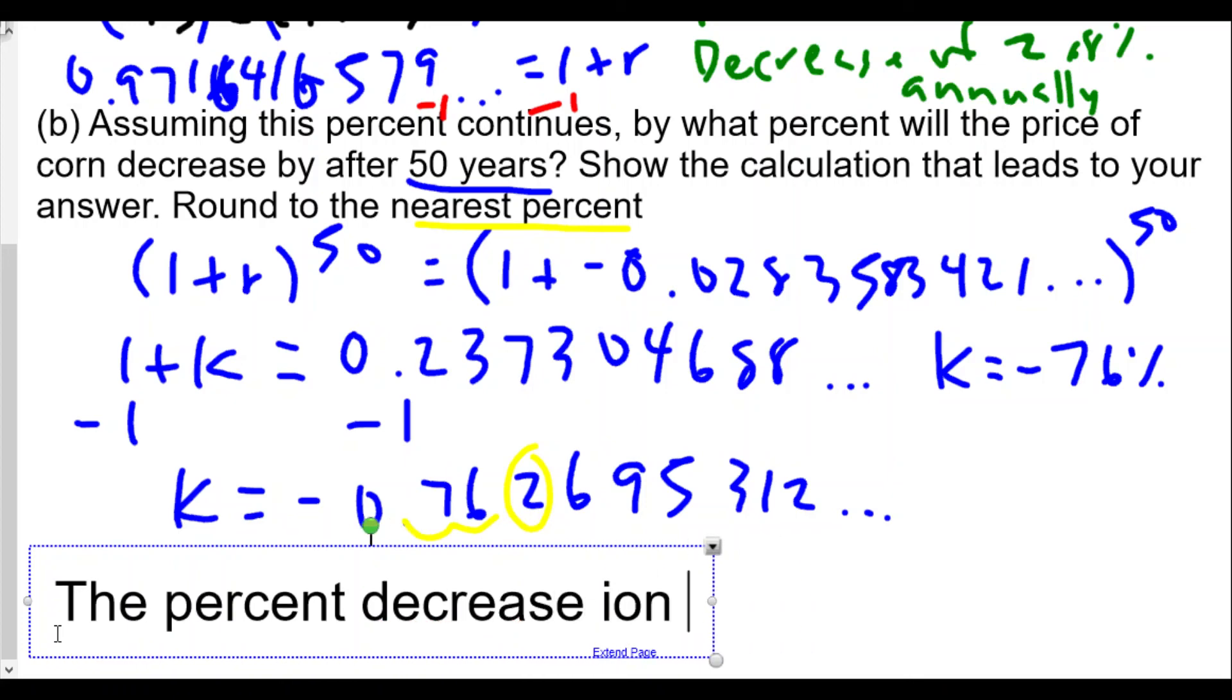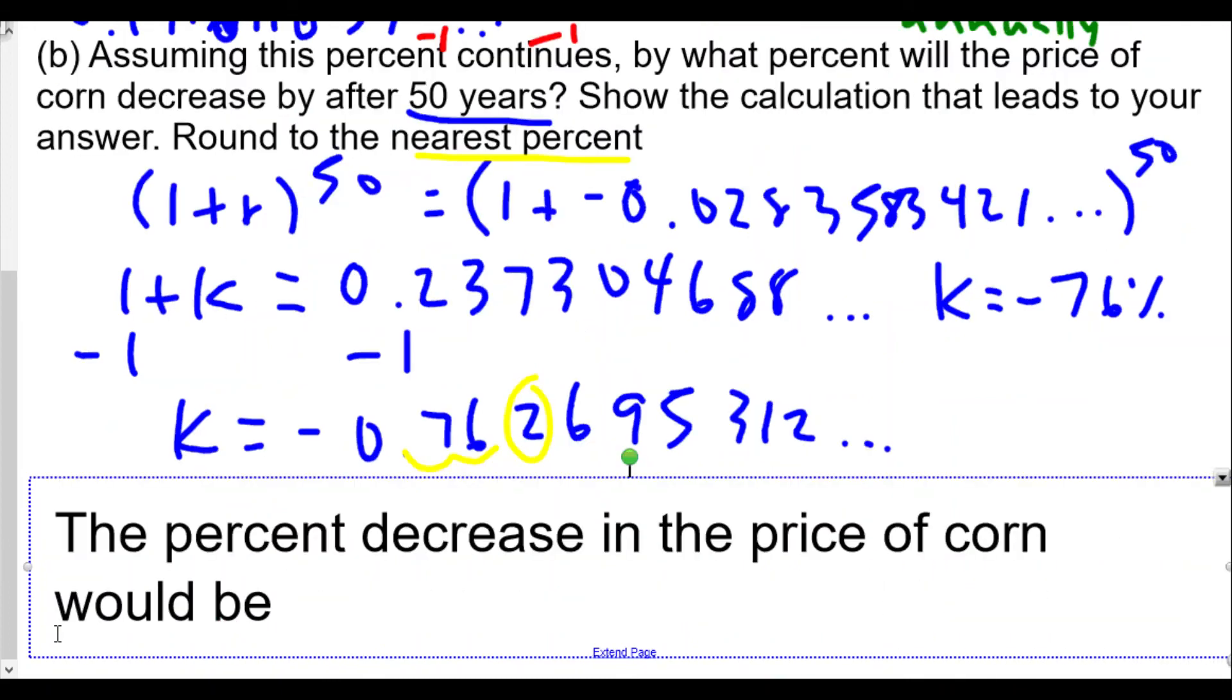In the price of corn would be about 76 percent after 50 years. This is a pretty dramatic price change.